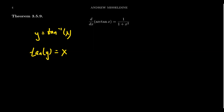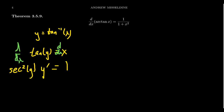If y equals tangent inverse of x, then applying the inverse function to both sides, tangent of y equals x. Now take the derivative implicitly on both sides — d/dx on both sides of the equation. The derivative of x with respect to x gives 1. The derivative of tangent gives secant squared of y, and then we multiply by y prime. Dividing both sides by secant squared of y, we get y prime equals 1 over secant squared of y. We're going to take a slightly different perspective here.